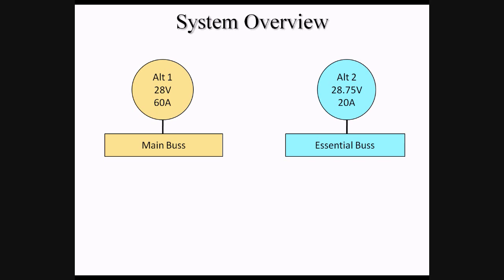The output of each of the alternators is connected to a bus called the main bus and the essential bus. A bus is simply a way of distributing electrical power to components that require electricity, rather than connecting each component directly to an alternator. The buses themselves are connected through a diode. A diode serves as an electrical one-way valve, allowing electricity to flow in only one direction.